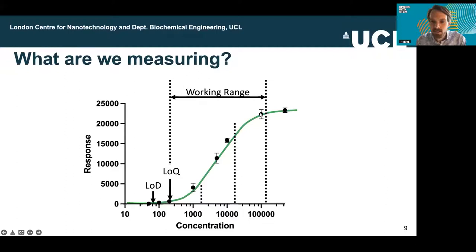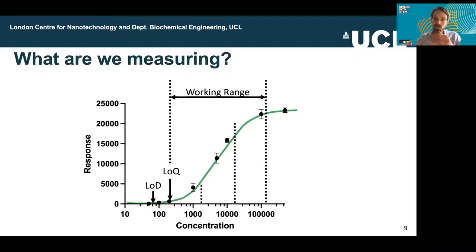An important point to note is error bars. In biochemical engineering, we're very interested in whether we can do something again reproducibly. Statistics is a key part of what we're doing — we're always repeating things, doing replicates. We might do technical replicates on the same day or larger-scale biological replicates where we start from scratch and see if it behaves the same way. We're always generating error bars, which are very useful for knowing how confident we are in drawing a conclusion.